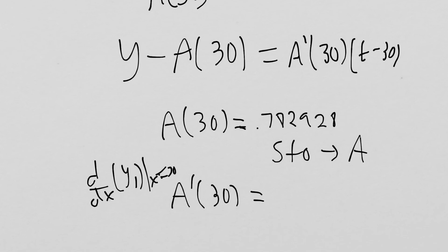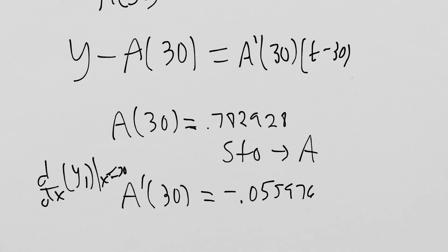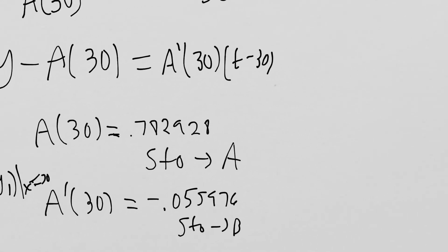So then we should store that as another letter, store it as alpha B or something. Make sure that we're writing that down so that they know how we're defining our A(30) and A'(30).